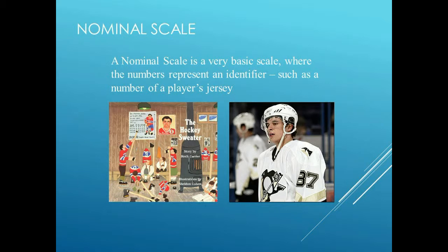For example, Sid Crosby is number 87 — I think it was the year he was born. Or, Rocket Richard was number nine. Those of you familiar with the famous Canadian hockey sweater story will know Maurice Richard was number nine. That is a nominal measure, meaning the number doesn't really mean anything other than act as an identifier, whether it's Crosby's 87 or Rocket Richard's nine.